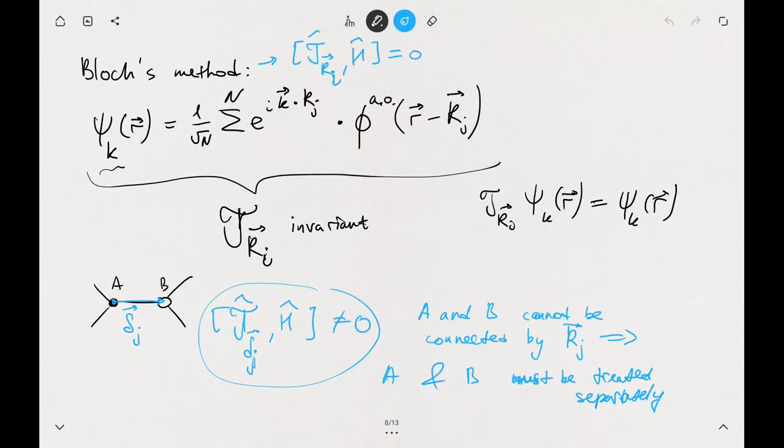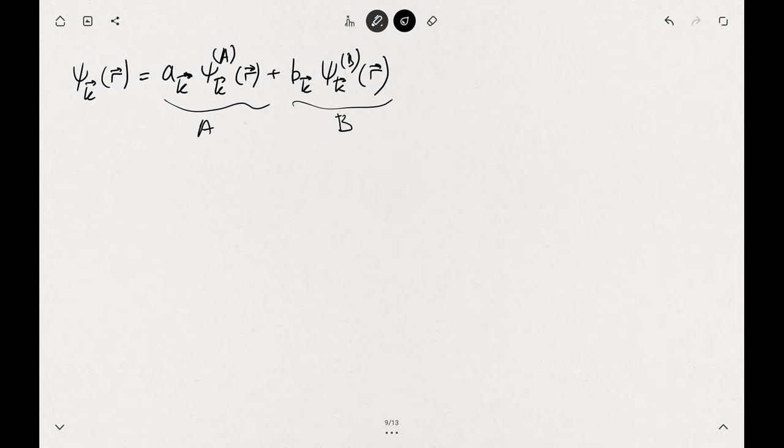Now the wave function, instead of this general description, we would just need to treat as that combination of the two wave functions, one for each sublattice. The picture is not that complicated actually. ψ_k(r) = a_k ψ_k^A(r) + b_k ψ_k^B(r). You have two components of the wave function: A component and B component. The total wave function is the linear combination of the two components.